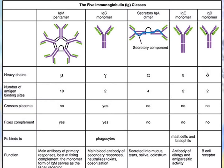This table shows the differences among the five classes of antibodies, including structural differences. IgM is generally in the form of a pentamer, IgA is in the form of a dimer, while IgG, IgE, and IgD are present as monomers. They are named according to their different heavy chains: mu, gamma, alpha, epsilon, and delta.